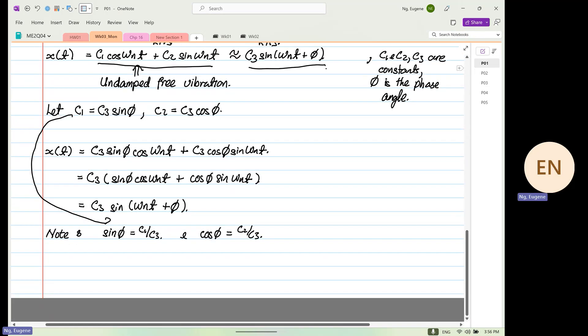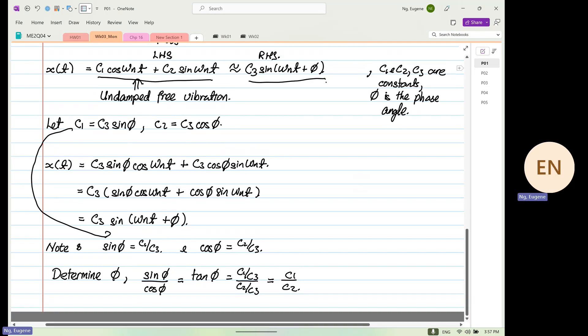So now, if we want to determine φ, we know that we have to make it sine φ over cos φ. And this is equal to tangent φ, and this whole thing will be equal to C1 over C3 divided by C2 over C3. So this is equal to C1 over C2. So that's your tangent φ. And finally, we know how to determine φ over here. We know how to determine ωₙ. Basically, ωₙ is equal to square root of k over m. And the last one is C3, we have to determine C3.